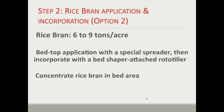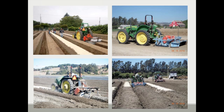Some growers made a modification where they decided to apply the rice bran just to the tops of the beds rather than the whole field — the idea being to concentrate the rice bran in the bed area. To do this, they developed their own equipment for depositing the rice bran on top of the bed, followed by a rototiller to incorporate it while still maintaining the bed structure.